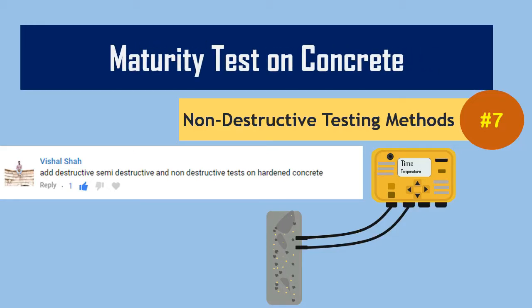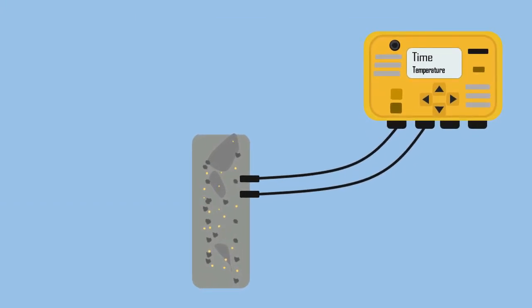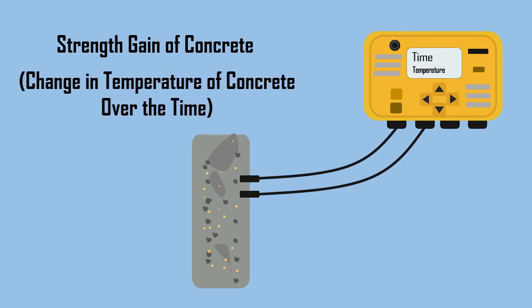Maturity Test on Concrete. The maturity method of NDT technique for determining strength gain of concrete is based on the change in temperature of concrete over time.